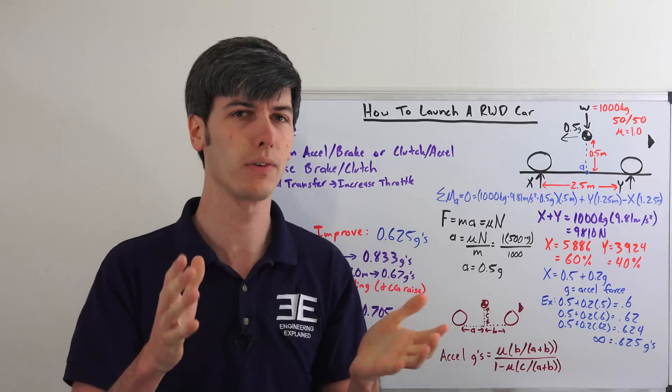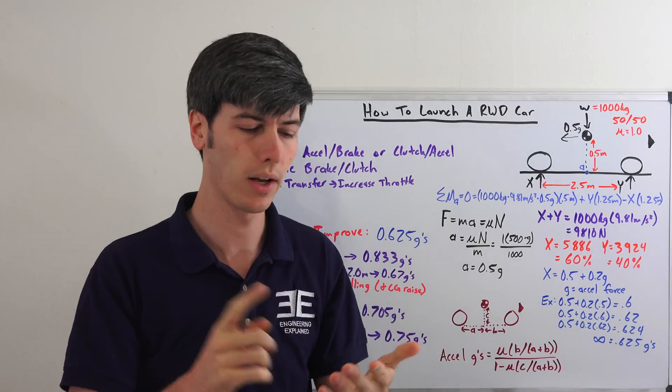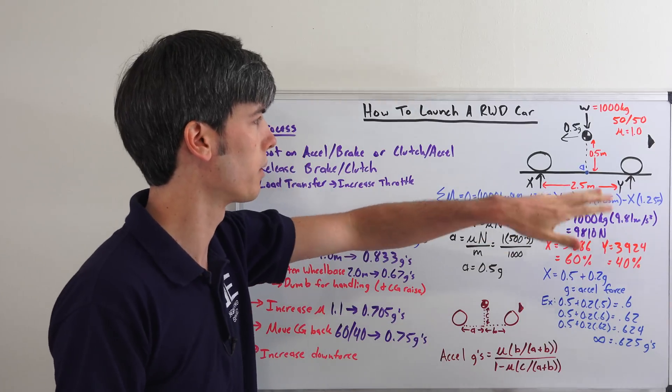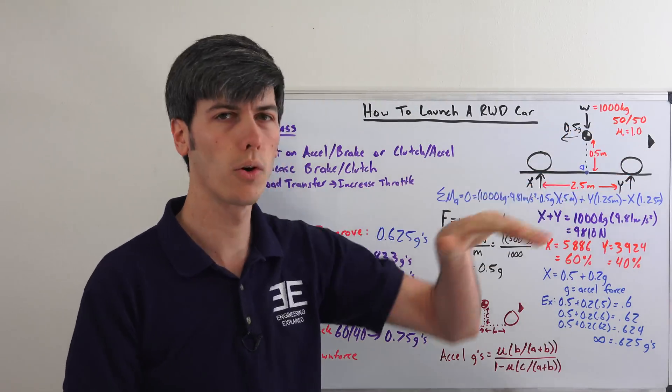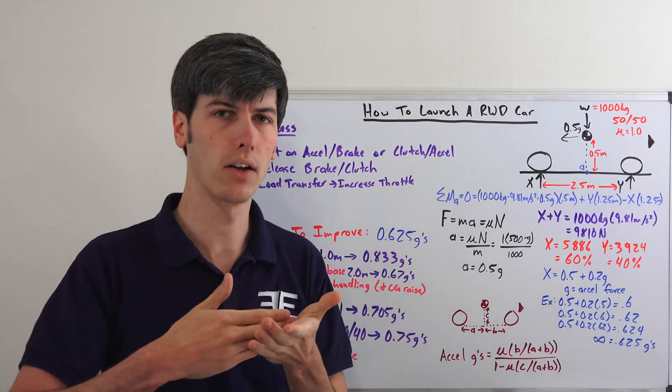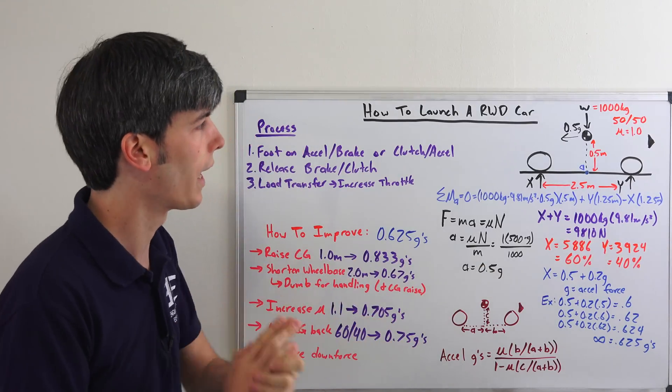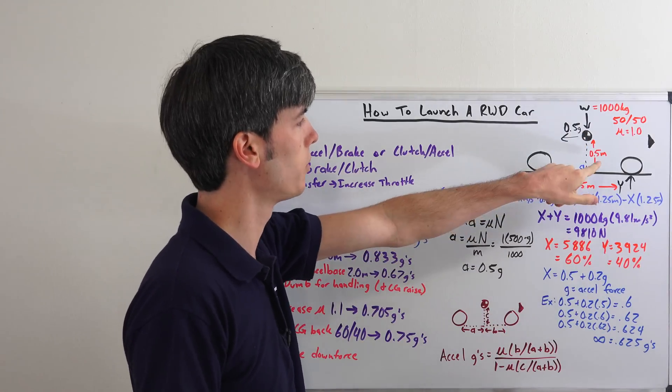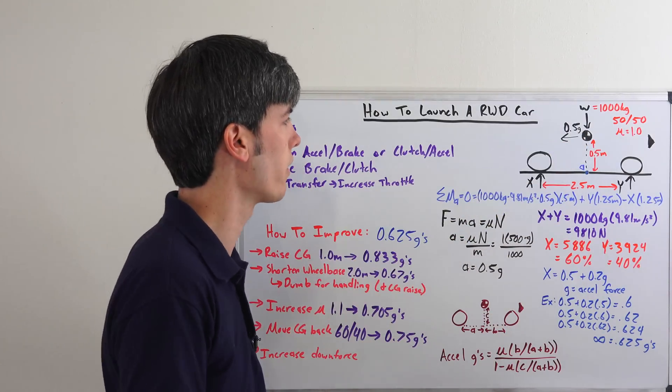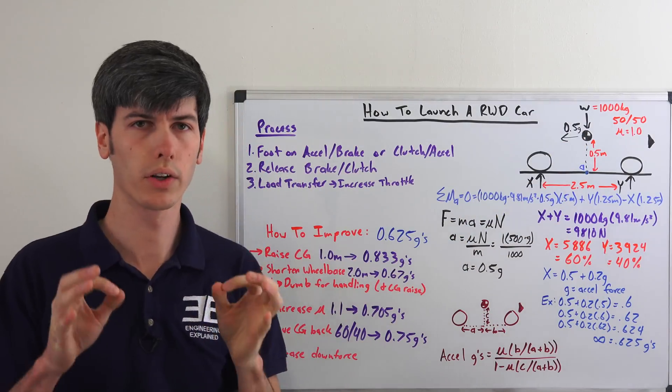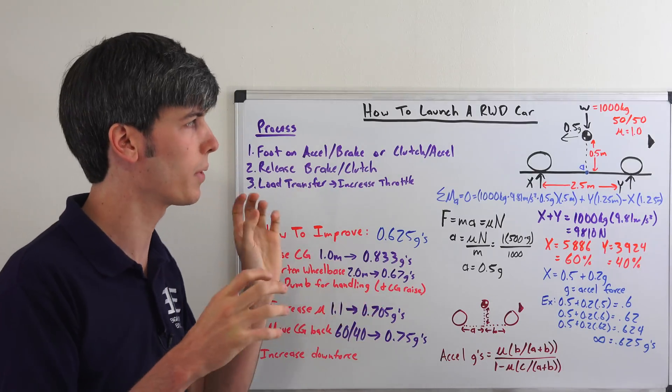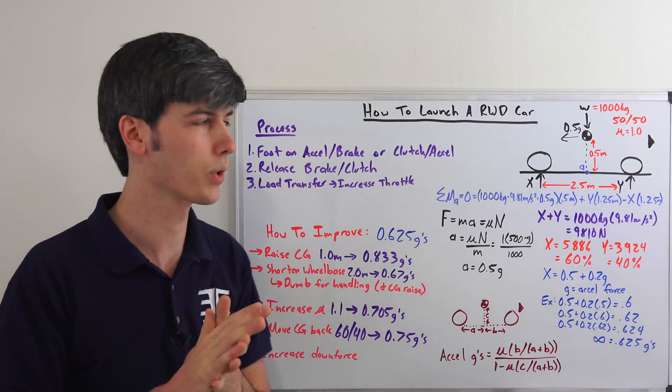So we're going to take a car that has a 50-50 weight distribution. It's going to weigh a thousand kilograms, which isn't really all that important. The weight of the car can be whatever. The frictional coefficient of the tire on the ground is going to be one. And then the distance from the center of the vehicle up to the center of gravity is going to be half a meter. So the distance to the center of gravity, half a meter. Okay, so we're going to start with a very simple question. And that is, what is the static acceleration? How much can it accelerate without any load transfer occurring?